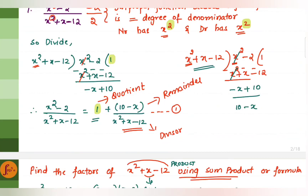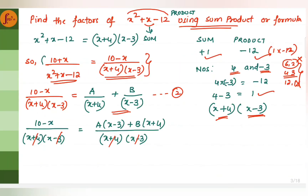As the next step, we take this portion — the remainder fraction — and resolve it into partial fractions. Then finally we add 1 to it. So we have the fraction 10 minus x divided by x squared plus x minus 12. Now we will have to split this denominator into factors.